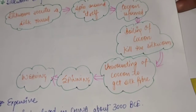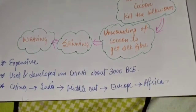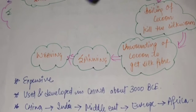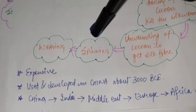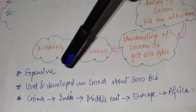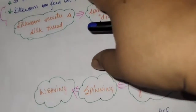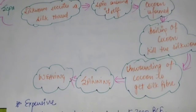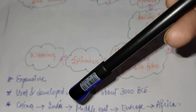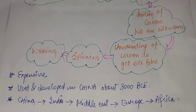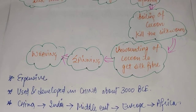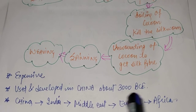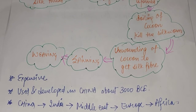This silk fiber is then spun and woven to form a fabric. Silk is a very smooth, shiny, and one of the most popular fibers, but it is very expensive. Silk was first developed in China about 3000 BCE. From China it spread to India, then the Middle East, then Europe, and then Africa. Africa is now also a good producer of silk.